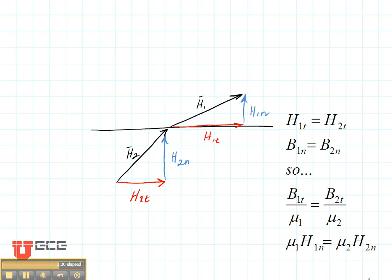The tangential magnetic field is equal in both cases as shown here. Again, is this one drawn to scale? No, because H2T should be equal to H1T.